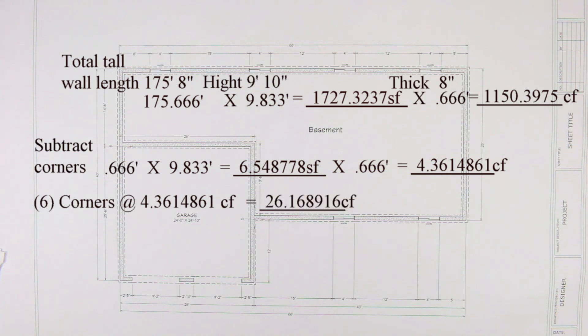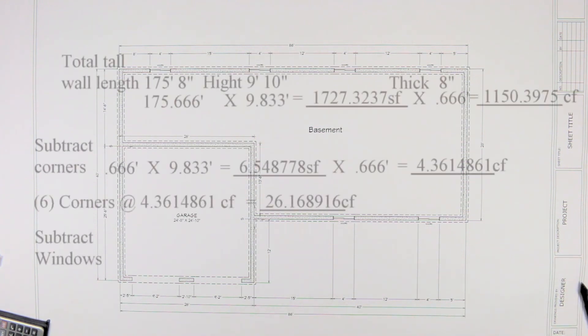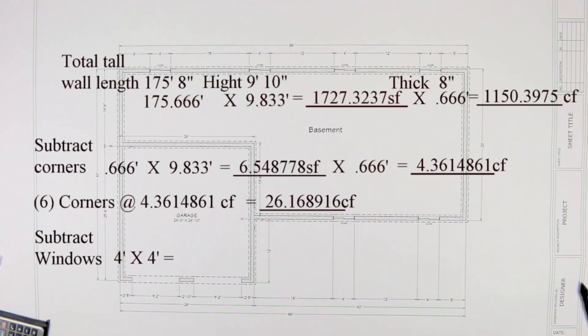We get 26.168916. Now as you can see in this foundation plan we have six windows and these windows are 4040 sliders and so we need to remove that from our cubic feet and that is 4 feet by 4 feet equals 16 square feet times 0.666 that equals 10.656 cubic feet. Now there are six windows and 6 times 10.656 equals 63.936.